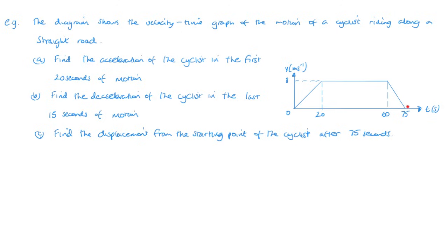Now this point is accelerating, this now is going at constant velocity, and then this one is decelerating, slowing down. Now find the acceleration of the cyclist in the first 20 seconds of motion.